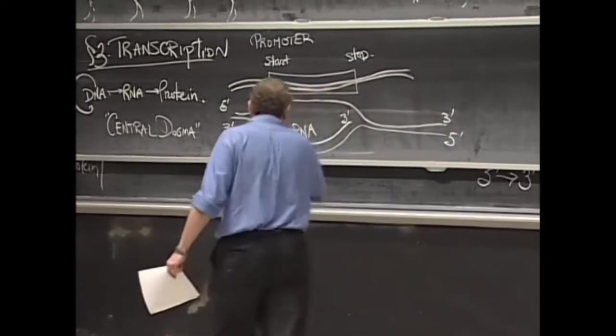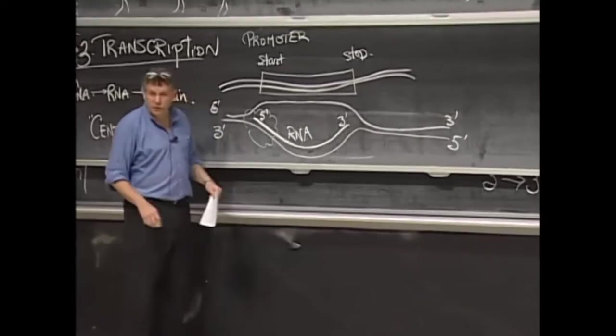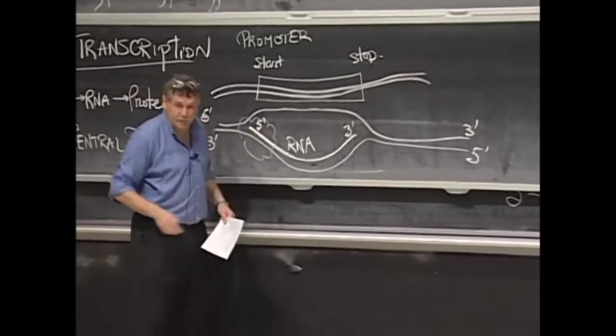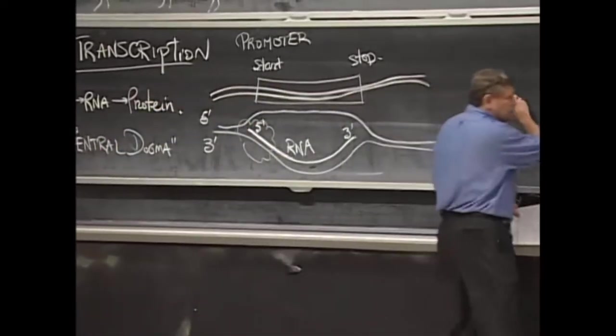And then it gets to a certain point, and it stops copying. This process of copying is called transcription because it's just a direct transcribing. So what's the difference between DNA and RNA?